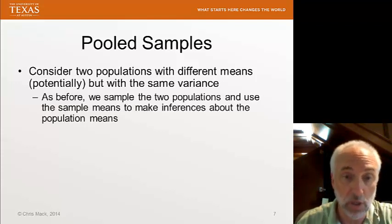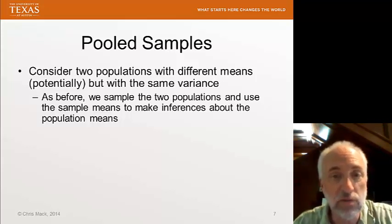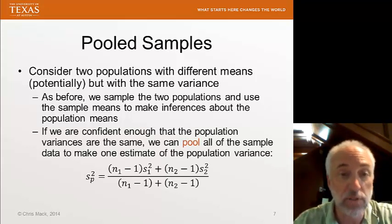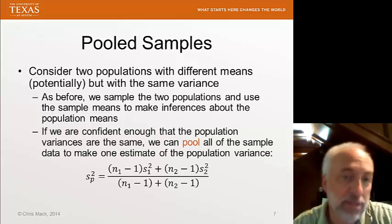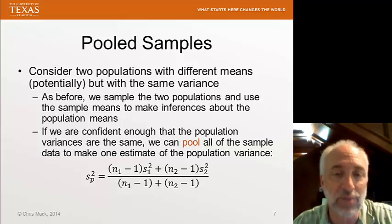What can we do? Well, as before, we sampled the two populations and do it independently so that the sample means are used to make inferences about the population means. But, if we're confident that the population variances are the same between these two populations, we can pool all of the sample data and make one estimate of the population variance.